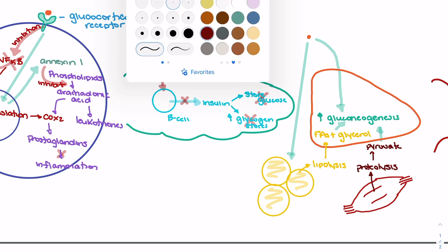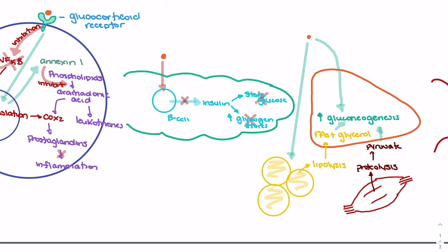With reduced insulin being released, there is also a decrease in glycogen formation. Less glucose is stored as glycogen, which further contributes to increased blood glucose levels.